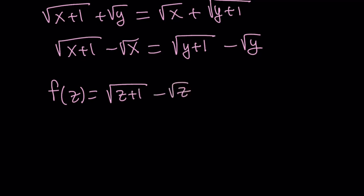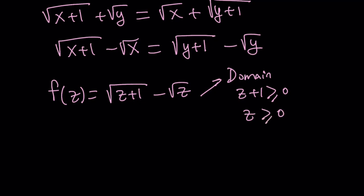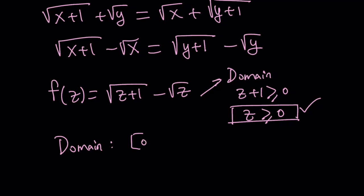Let's take a look at this function. What is its domain? We need z plus 1 ≥ 0 and z ≥ 0. But if z ≥ 0, then z plus 1 is automatically ≥ 0. Therefore the domain is z ≥ 0, or the interval [0, infinity).